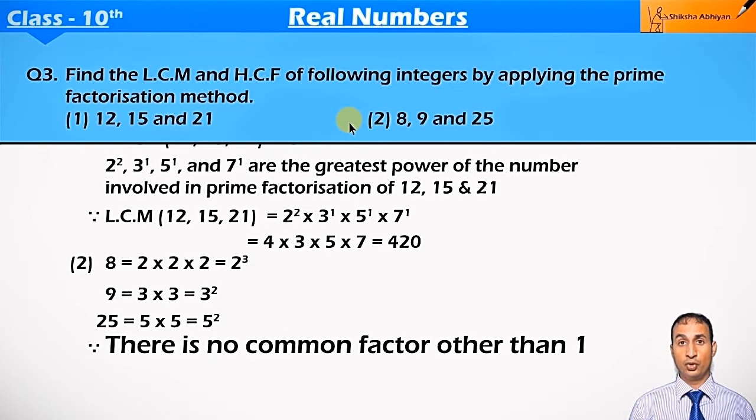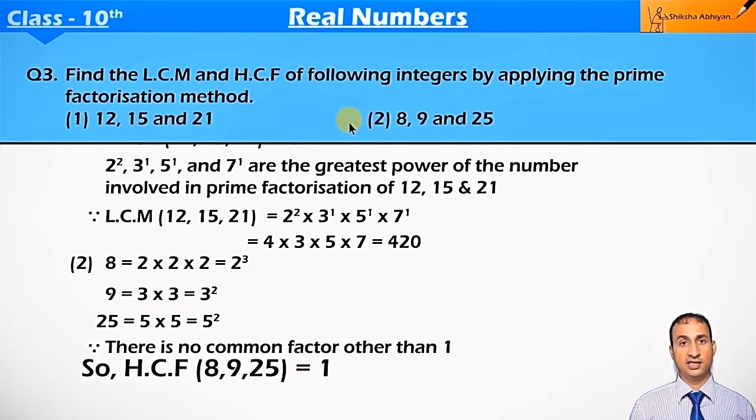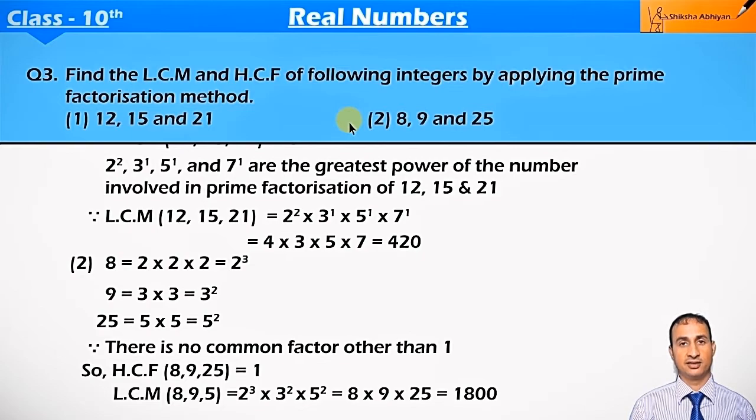Since there is no common factor other than 1. In these numbers there is no common factor, and when there's no common factor then 1 is the common factor. So HCF of 8, 9, and 25 is equal to 1. Now, LCM of 8, 9, and 25 is 2³ × 3² × 5², that is 8 × 9 × 25 equal to 1,800. This question is complete.